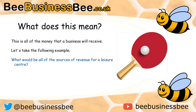The best way to look at this is with an example, and in this example we're going to use the local leisure centre. What I'd like you to do is get a pen and paper or find a document on the computer. Pause the video and list all the different sources of revenue that you think the local leisure centre will have — so where will it get all its money coming in from?